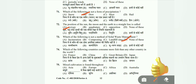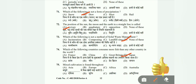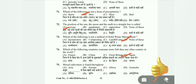Question 74: Which of the following countries consumes more fish than any other country in the world? Options: France, China, Great Britain, Japan. The correct answer is D, Japan. Question 75: Mixed cultivation is found throughout which region — Asia, Europe, Africa, or Australia? The correct answer is Europe.